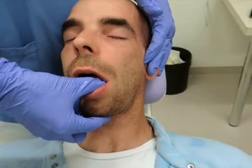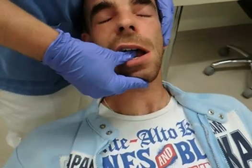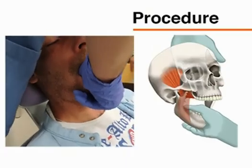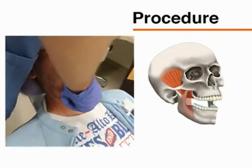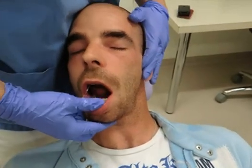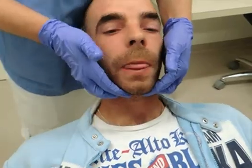After you reduce one TMJ, hold it in position with your non-dominant hand by positioning a finger in front of the condyle. Then reposition the other TMJ in the manner just described. Verify normal occlusion once you have repositioned the entire jaw.